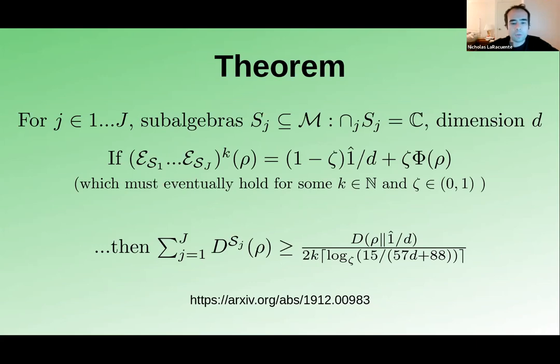The main result is a theorem showing there's such a quasi-factorization inequality for sets of subalgebras when their intersection is the complex scalar multiples of the identity. An interleaved iterated product of conditional expectations is equivalent to a convex combination of a completely mixing channel and another unital channel. These parameters determine the lower bound on the quasi-factorization constant. Thanks for listening.